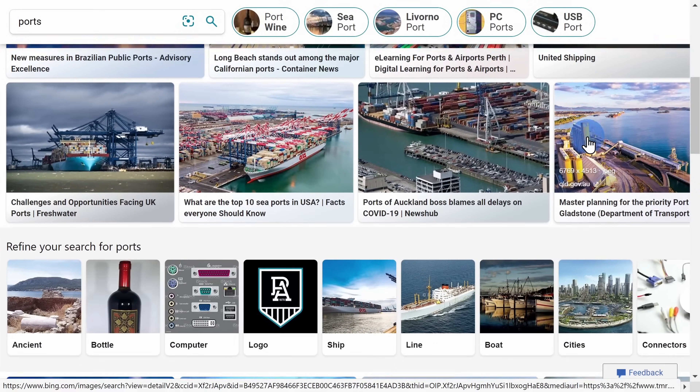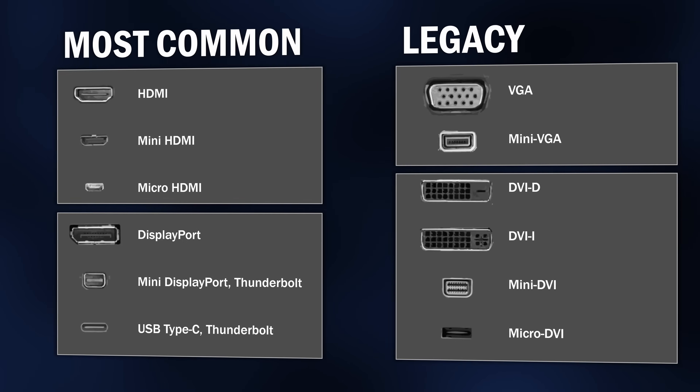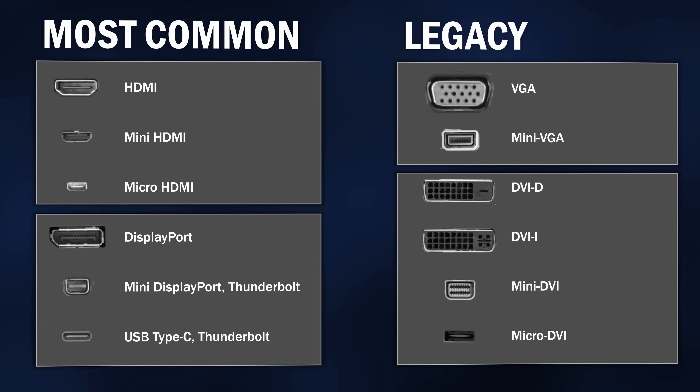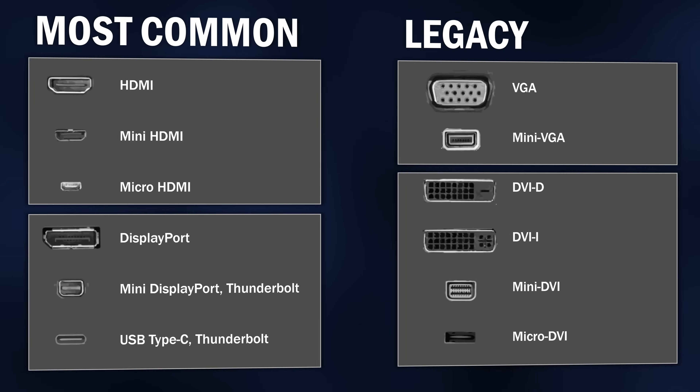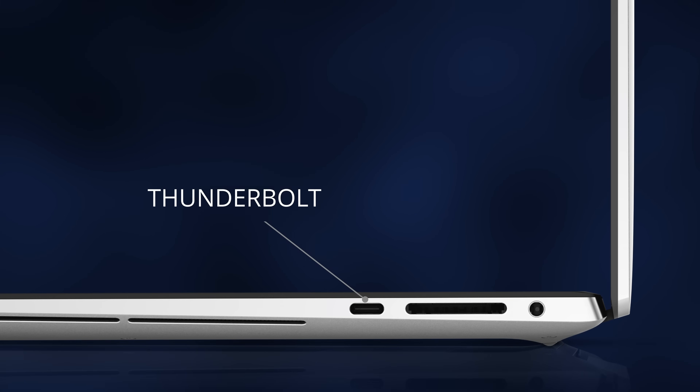First, we need to look at the available ports on your computer — the physical ports that you'll find on the side or on the back of your computer — and you'll likely see lots of different ports. We're looking specifically for the display ports. Here's a view of some of the most common display ports. Feel free to pause the video right now to see if you can find a matching port on your computer. Once you find it, that is your display port. Here as an example, I have a laptop and this one happens to have a Thunderbolt display port.